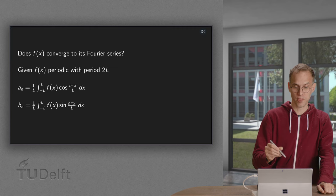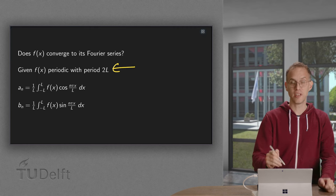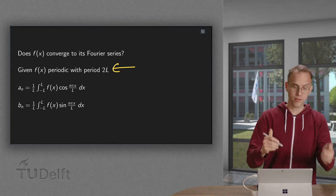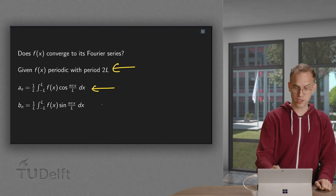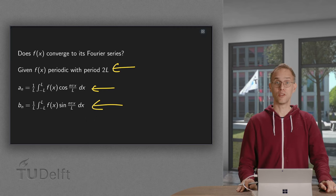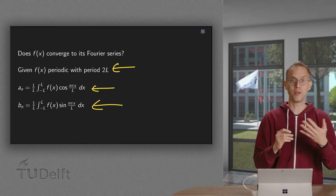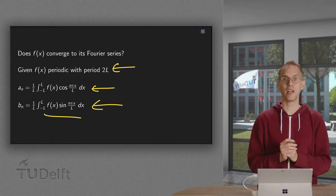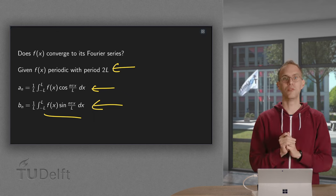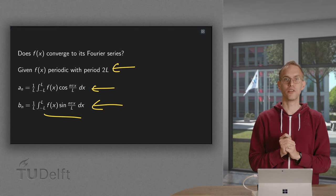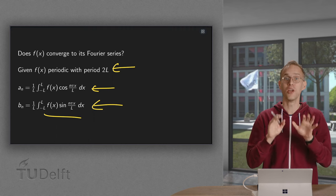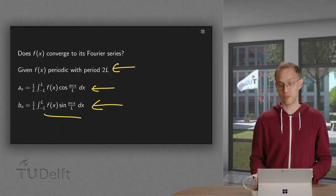So what do we have? We have some function f(x), which is periodic with period 2L. Then we're going to compute Fourier coefficients a_n and b_n. You already see that you cannot do this for any f(x). You have to be able to compute these integrals. If you have functions which blow up hugely, you cannot compute these integrals. You cannot find Fourier coefficients. We will need some conditions.